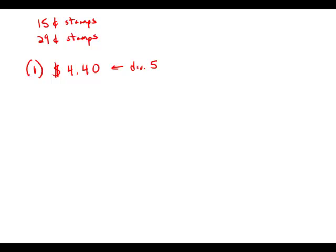So the first thing we notice is that we can't buy zero 29-cent stamps because then we'd have to buy 440 all in 15-cent stamps. And that just doesn't go in, 15 doesn't go in evenly to 440. So that just doesn't work.